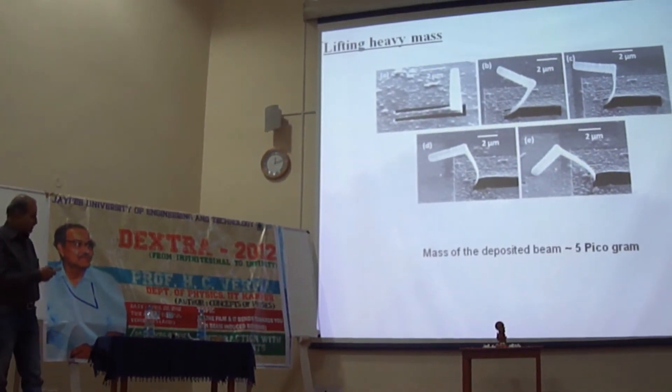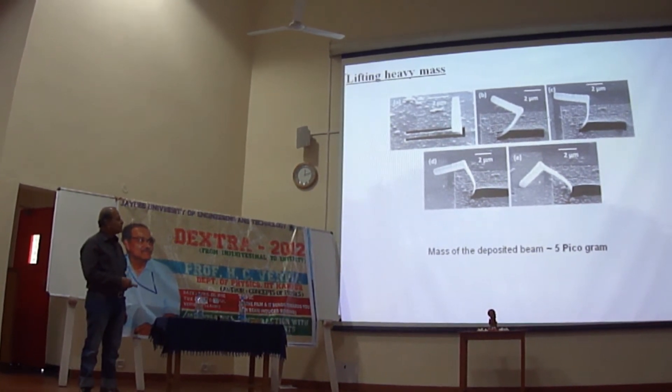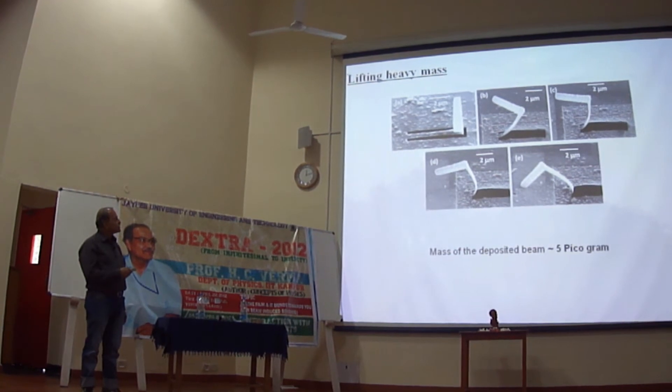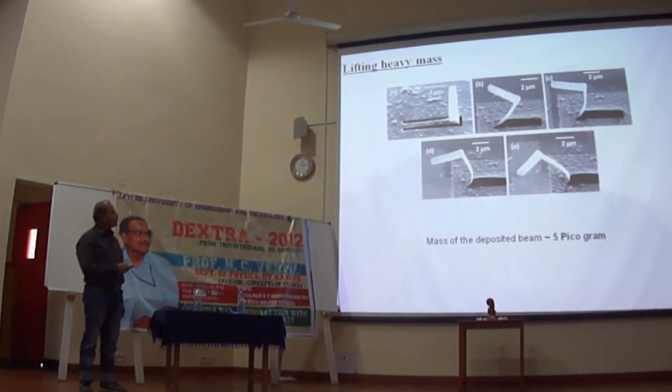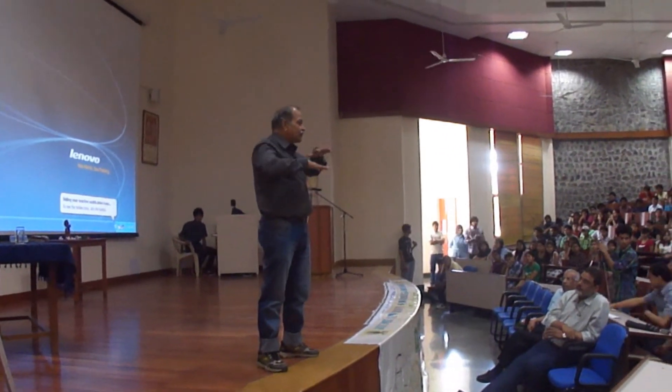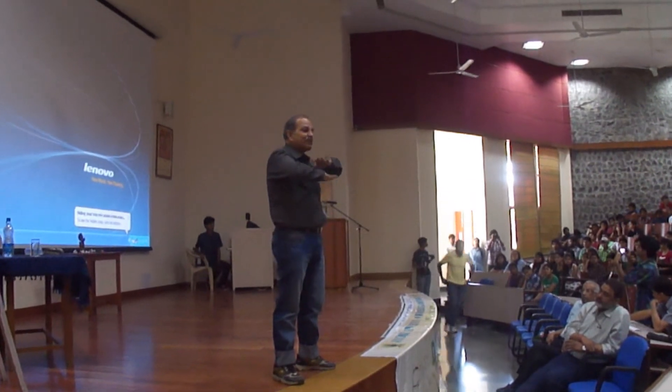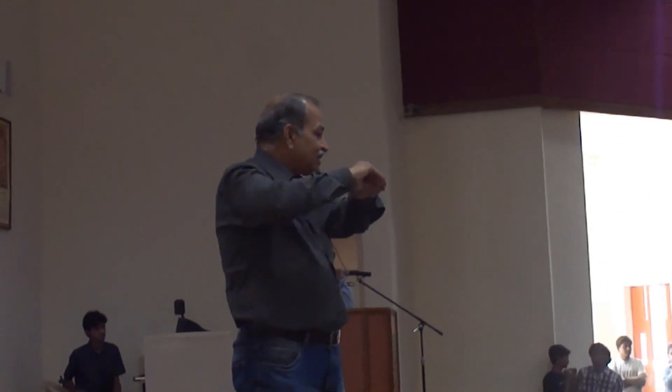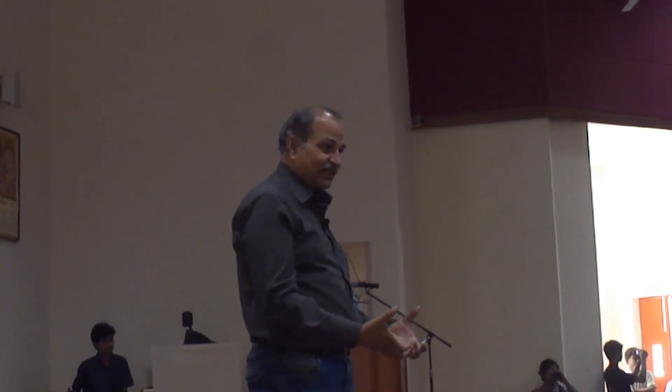Now, lifting heavy masses — on this cantilever we have deposited a pillar of about 5 picograms, and then used the ion beam to bend it, lifting the whole load. If the film is around 10 to 15 nanometers, you need at least 15 nanometers more for support. If it is too thick, perhaps it will become heavy and the whole thing will be difficult to bend. My guess would be that 100 to 200 nanometers would be the optimum film size, and we can verify that experimentally.